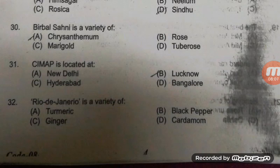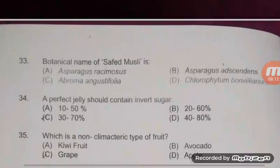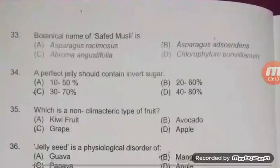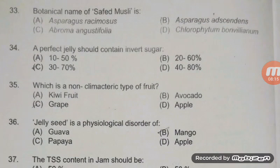Rio de Janeiro is a variety of ginger — option C is right. The botanical name of safed musli is — option D is right — Chlorophytum species.